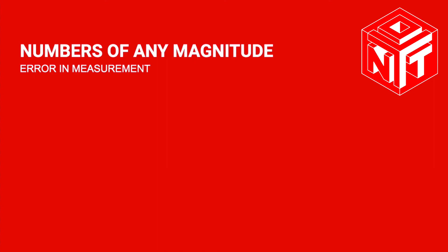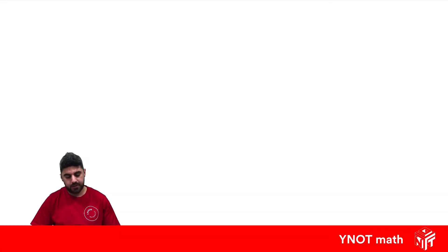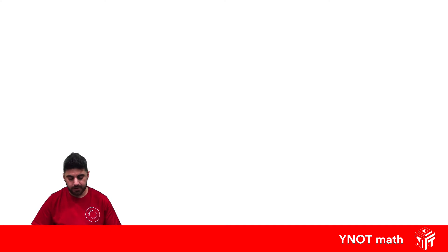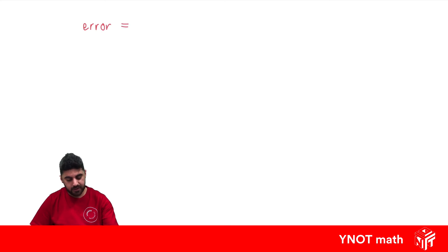Error in measurement. As human beings, we can sometimes measure things incorrectly, and that's what we're going to look at in this video. When we measure things, our error in measurement can be defined as plus or minus 0.5 multiplied by the smallest unit of measure.